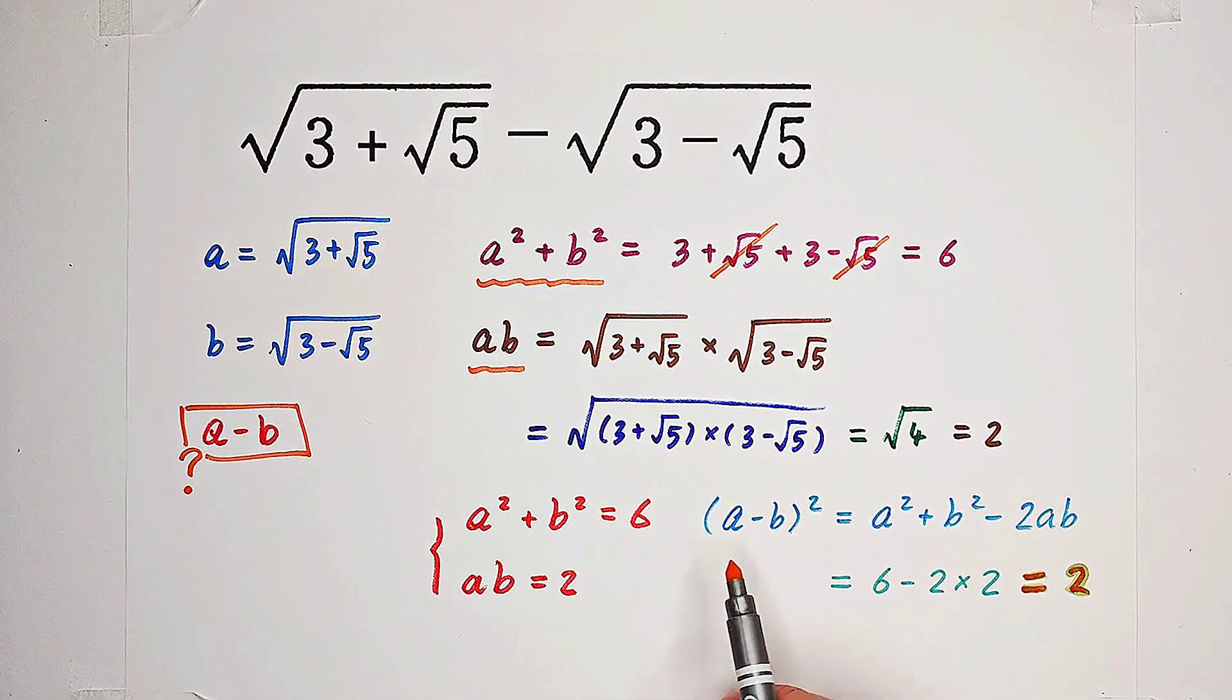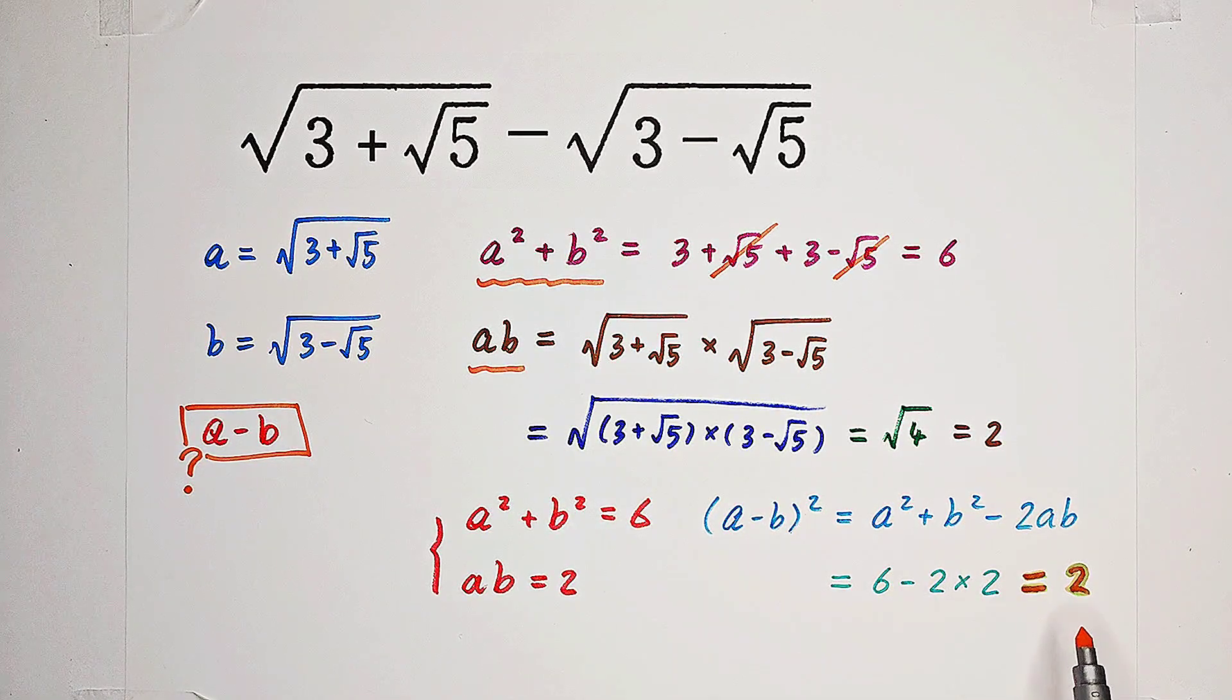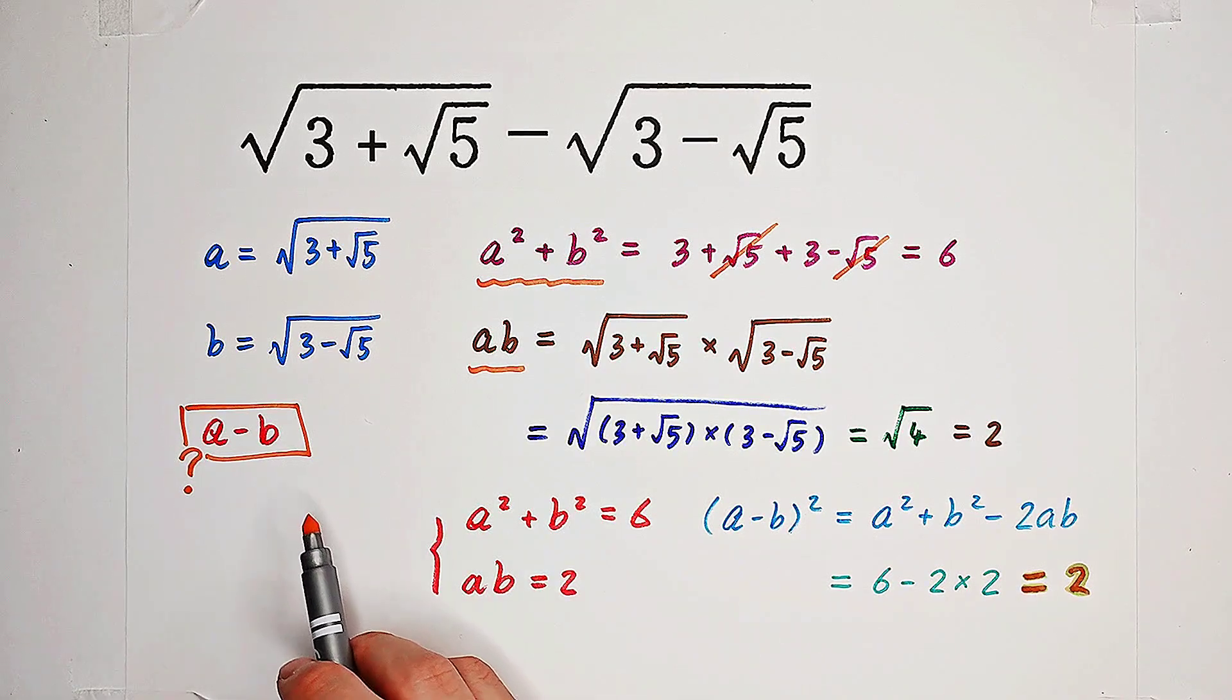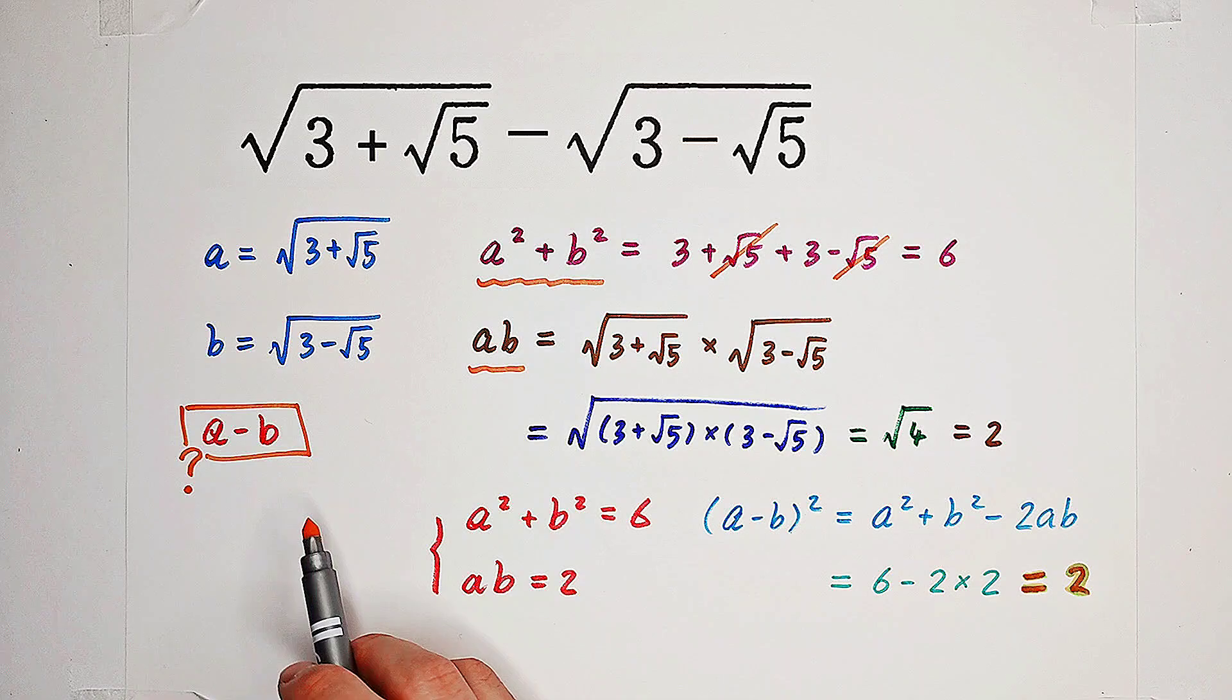So now you can see a minus b all squared equals 2. So what is the value of a minus b? Maybe you're going to say square root of 2 or negative square root of 2.